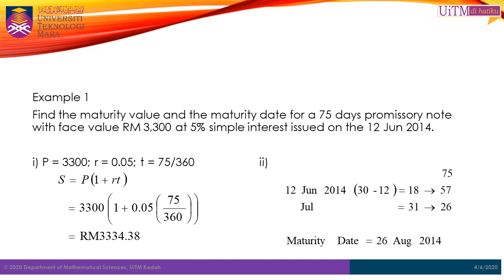To find the maturity date, since we are using banker's rule, we need to find the exact date for 75 days after the initial date of June 12th. As can be seen in the slides, the maturity date is August 26th. Thus, Abu must pay Ahmed RM 3334.38 on the 26th of August.